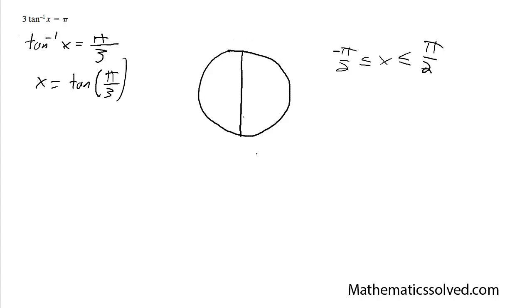So it's going to be in quadrant 1, pi over 3, which is 60 degrees.